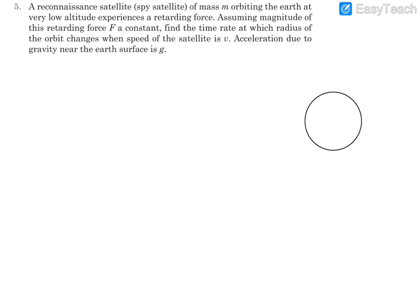Let's say this is an orbit, and in this orbit the satellite is moving with velocity V when its radius is R. We need to find the rate of change of this radius.